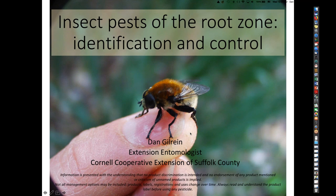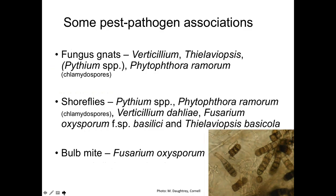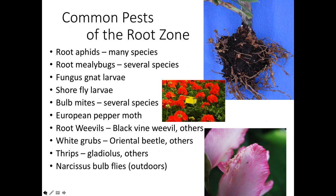This slide shows a picture of a narcissus bulb fly — we won't be talking about that, but it's one example of the below-ground pests we sometimes deal with. This is primarily an outdoor pest problem. These are some of the common pests I've had questions about over the years that are found in the root zone of plants.